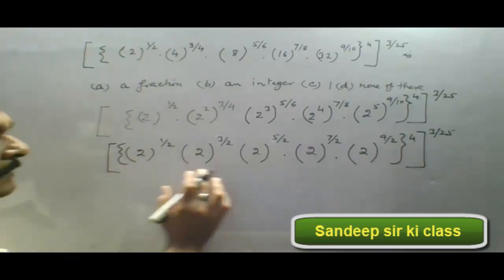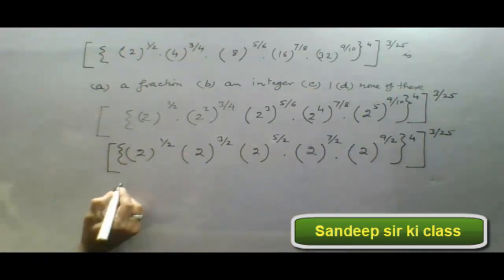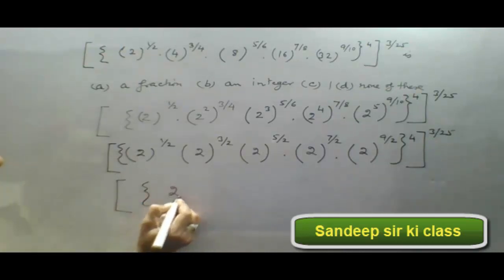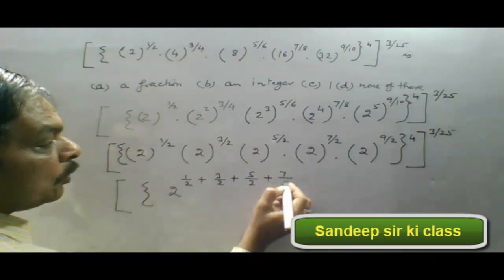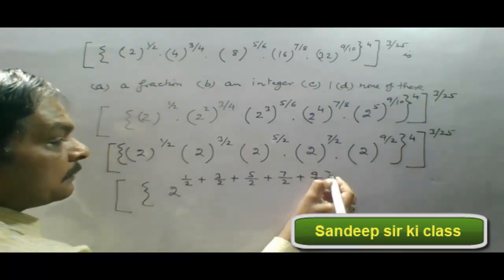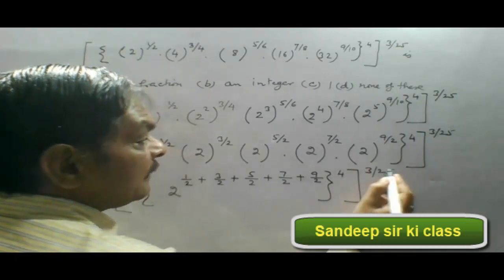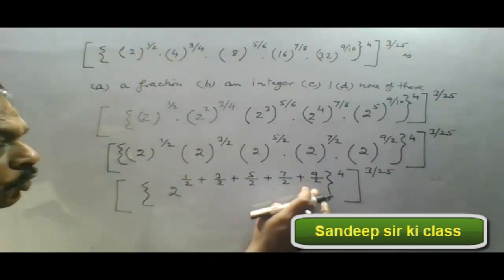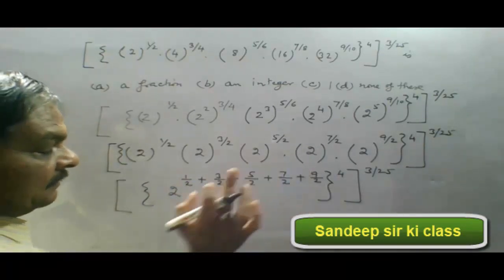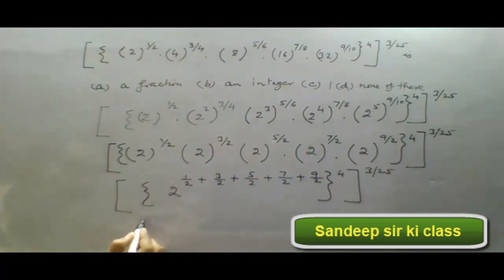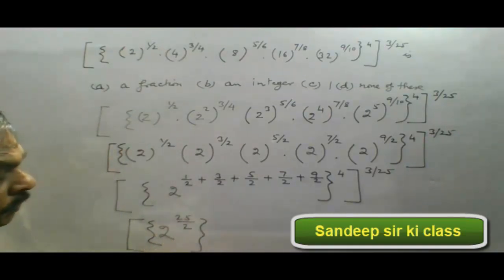Now we simplify the curly braces. Since the base is same, the powers are added. So we get in curly braces 2 raised to the power 1 upon 2 plus 3 upon 2 plus 5 upon 2 plus 7 upon 2 plus 9 upon 2. The power outside the curly braces is 4, and the whole power is 3 upon 25. The LCM is 2 and the numerator is 1 plus 3 plus 5 plus 7 plus 9, which comes as 25. So this becomes 2 raised to the power 25 upon 2, to the power 4.